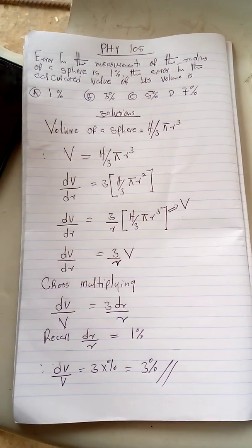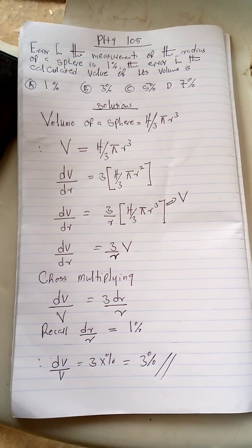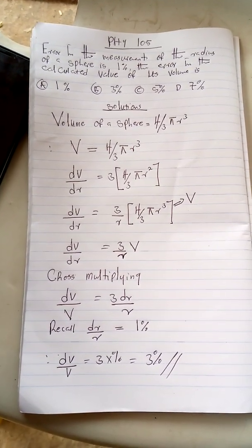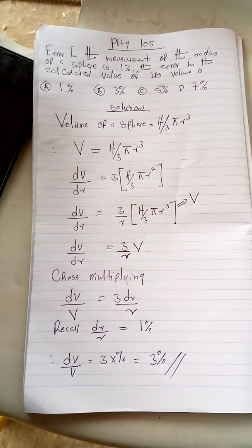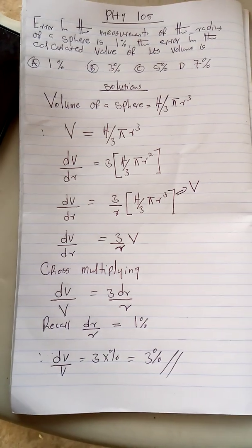If you have 5 percent, you don't even need to stress yourself. You already know what your value will be. So in this case, we now have dr over r equals 1 percent, and dV over V equals 3 times 1 percent, that is 3 percent.